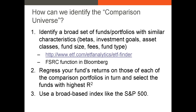There are some other tools you can use to identify the comparison universe. Bloomberg has a search function that allows you to search for funds and restrict your comparison universe based on different fund sizes, asset classes, fees, and goals. We'll use that function — the FSRC function — in class. This is arguably our best way to identify our comparison universe, essentially restricting that universe based on the characteristics of each fund.